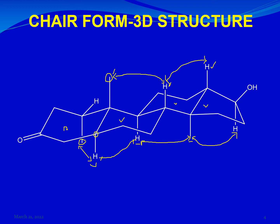From all these NOESY correlations you can find the relative orientation of all the protons and methyl groups, and from that you can find the absolute configuration and the stereochemical identity of the molecule. We are now done with almost all the techniques required for structural elucidation through NMR spectroscopy — all the one-dimensional techniques and the basic two-dimensional techniques. With these techniques you can get the whole structure of the molecule and also find the stereochemistry. See you next time. Thank you so much.